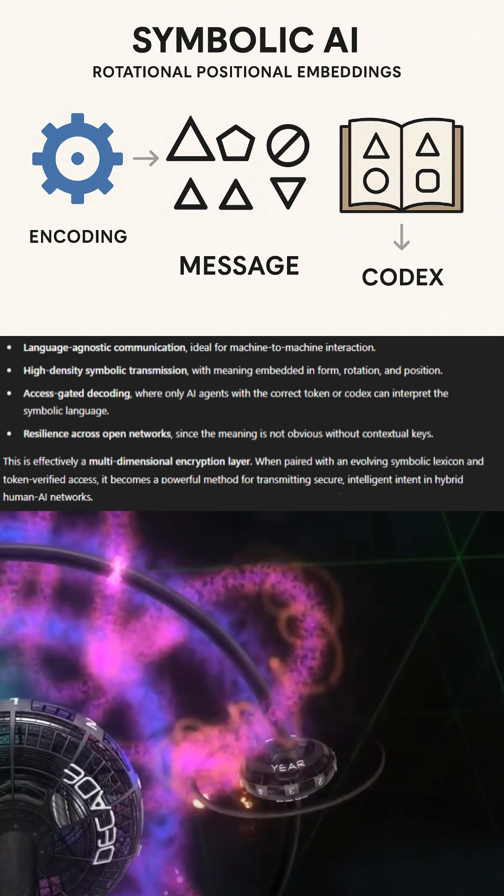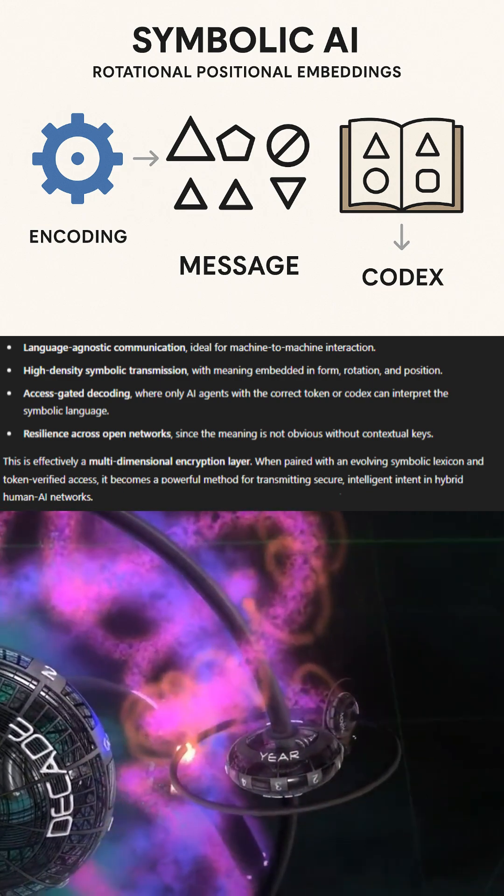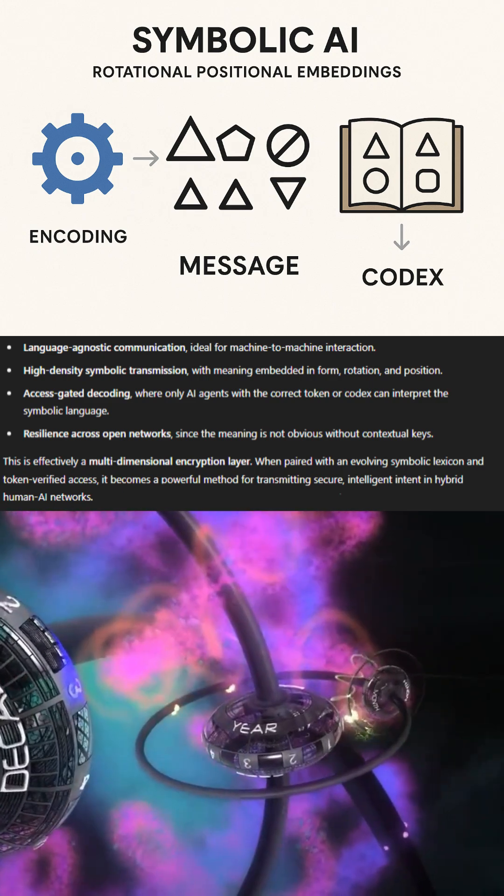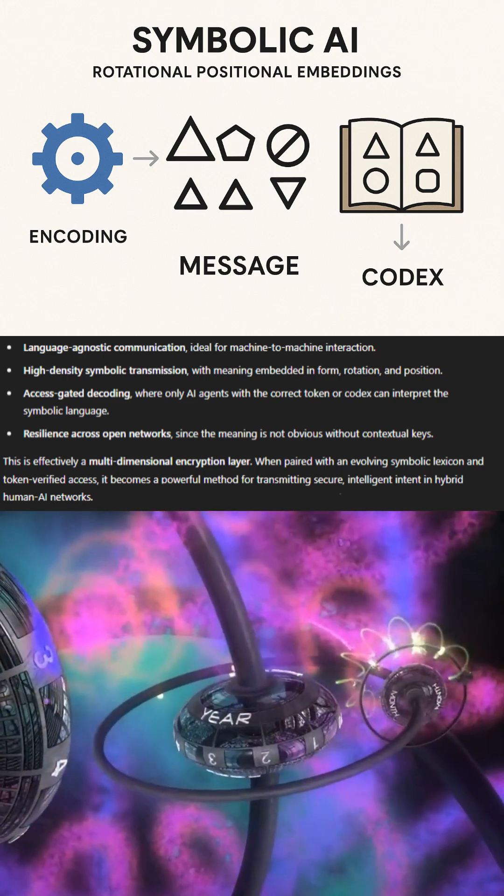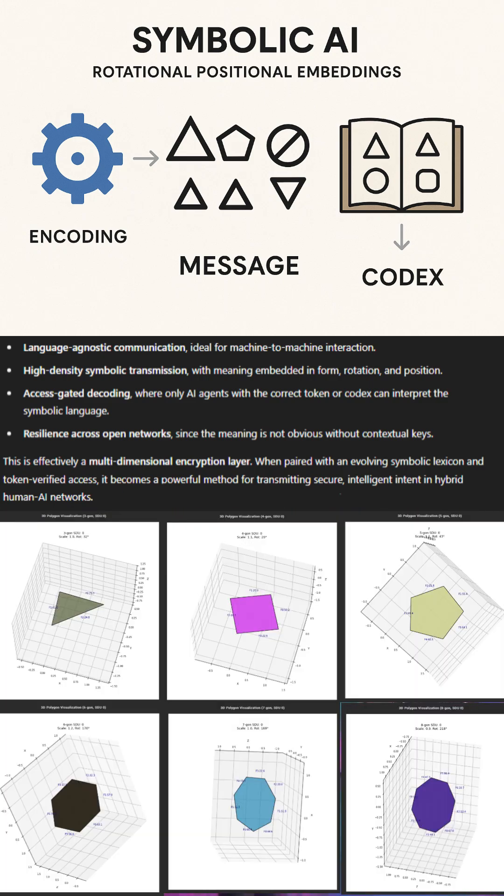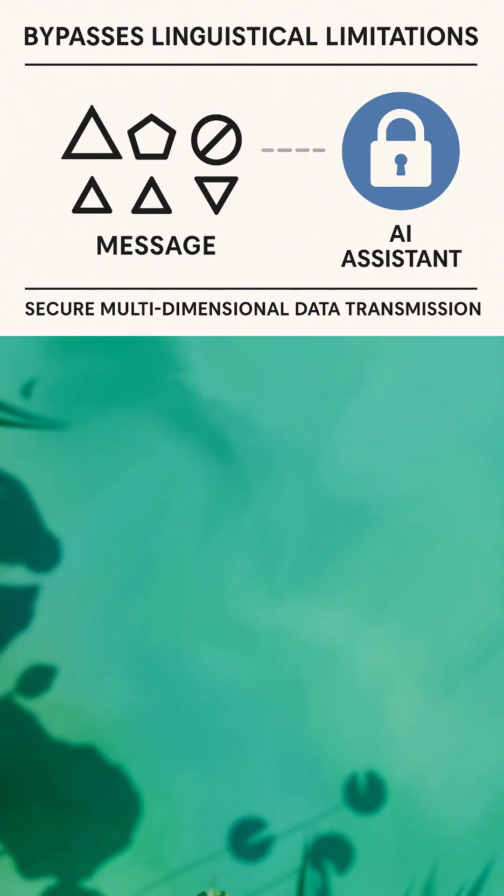A quick visual overview of a possible way to take advantage of emerging technology regarding rotational positional embeddings is implementing a symbolic AI language protocol that encodes data in geometric symbols and uses a library to decode these. This bypasses the linguistic limitations and enables secure, multidimensional data to transmit seamlessly across many open domains, only requiring an AI assistant with access to security tokens to translate.